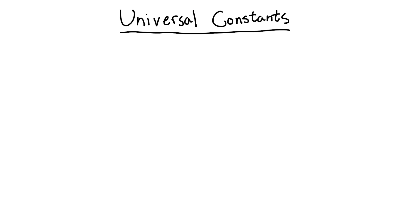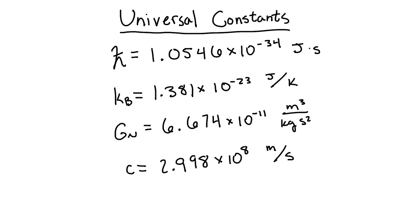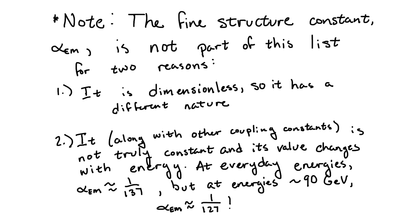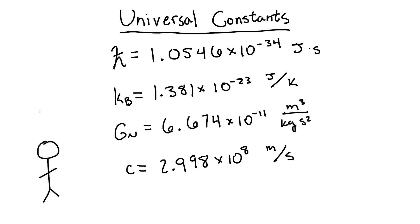These include constants such as Planck's constant, the Boltzmann constant, Newton's gravitational constant, and the speed of light in a vacuum. But what exactly do these constants tell us? What can we learn about the universe simply from the fact that these constants show up in our theories?